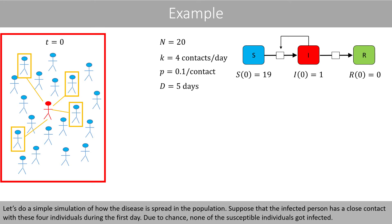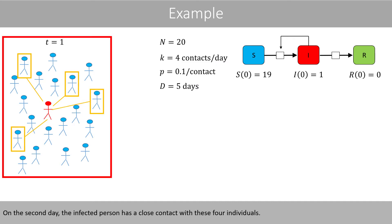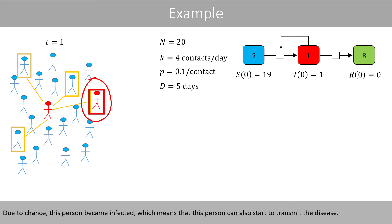Let's do a simple simulation of how the disease is spread in the population. Suppose that the infected person has a close contact with these four individuals during the first day. Due to chance, none of the susceptible individuals got infected — remember that the probability to transmit the disease during one close contact is only 10%. On the second day, the infected person has a close contact with these four individuals, and due to chance, this person became infected, which means that this person can also start to transmit the disease.